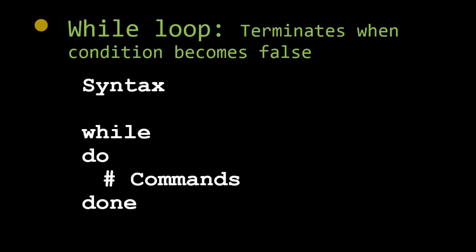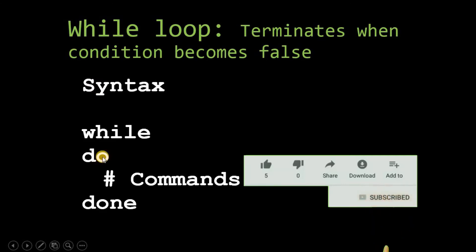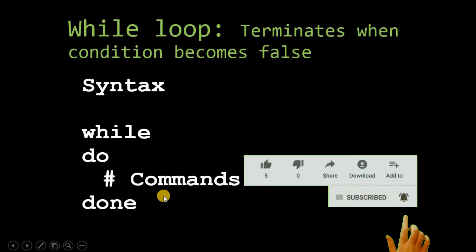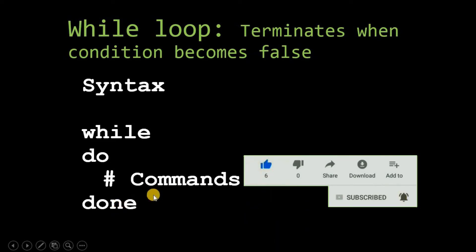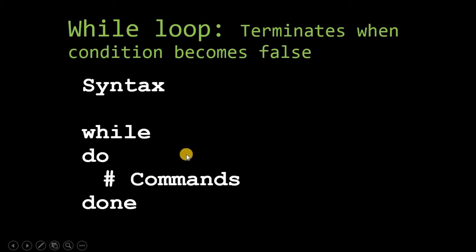Hello and welcome to this next tutorial on shell scripting. In the last tutorial we studied the while loop. The syntax of the while loop is: 'while', then 'do', then some statements that you want to execute, and finally a 'done' statement to close the block. Similar to the while loop, there is an until loop in shell scripting, and we will understand the difference between them.